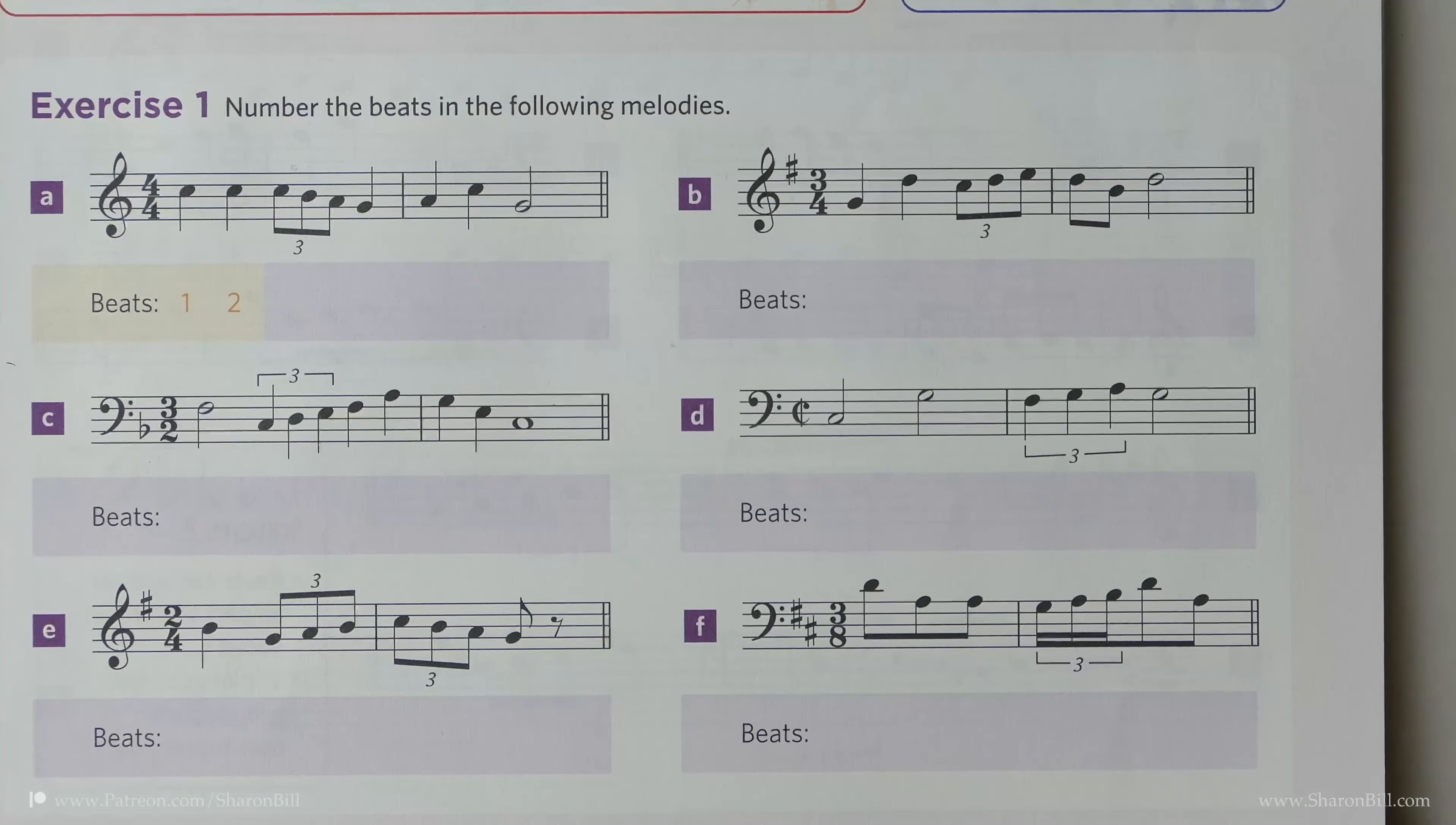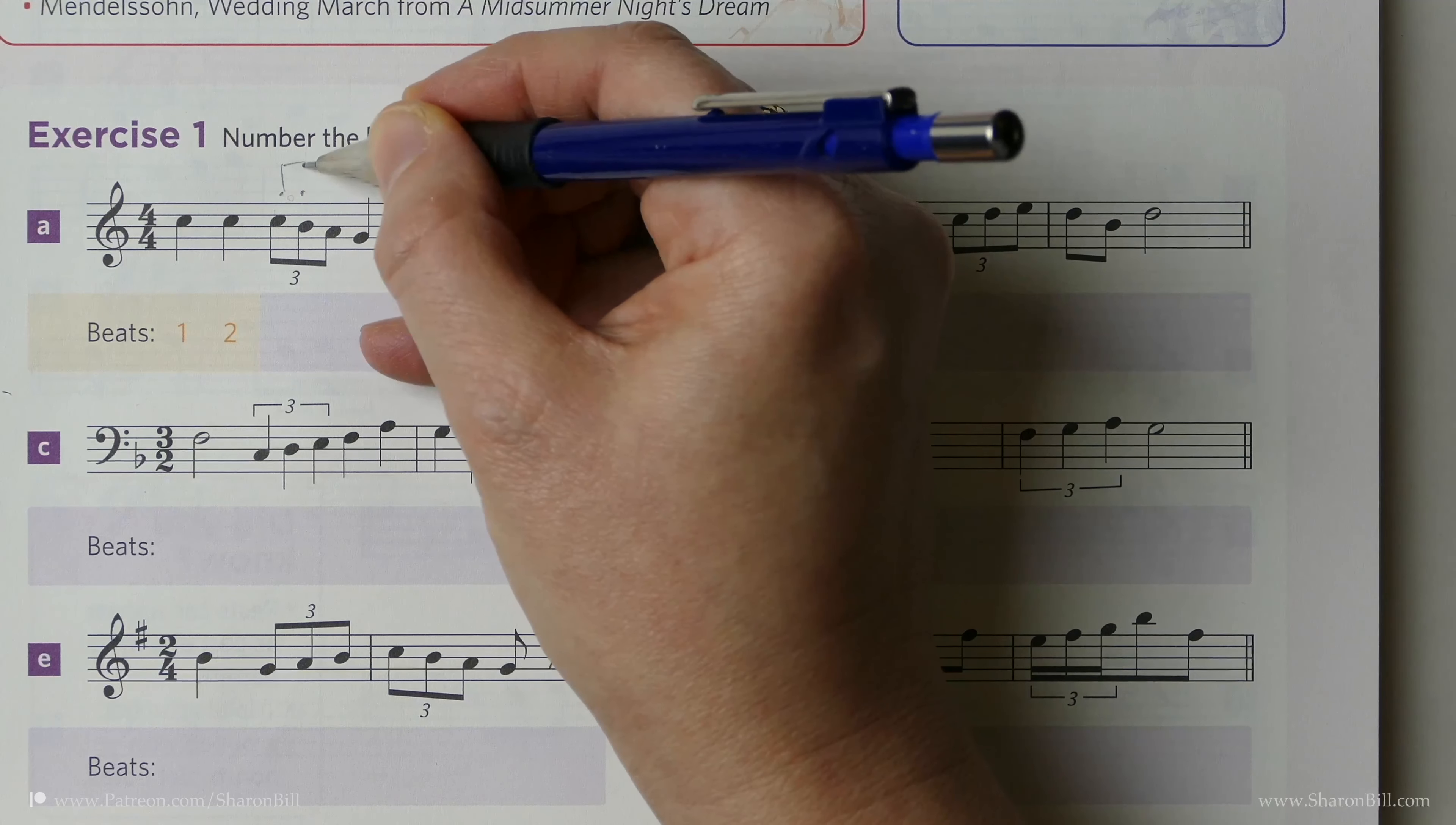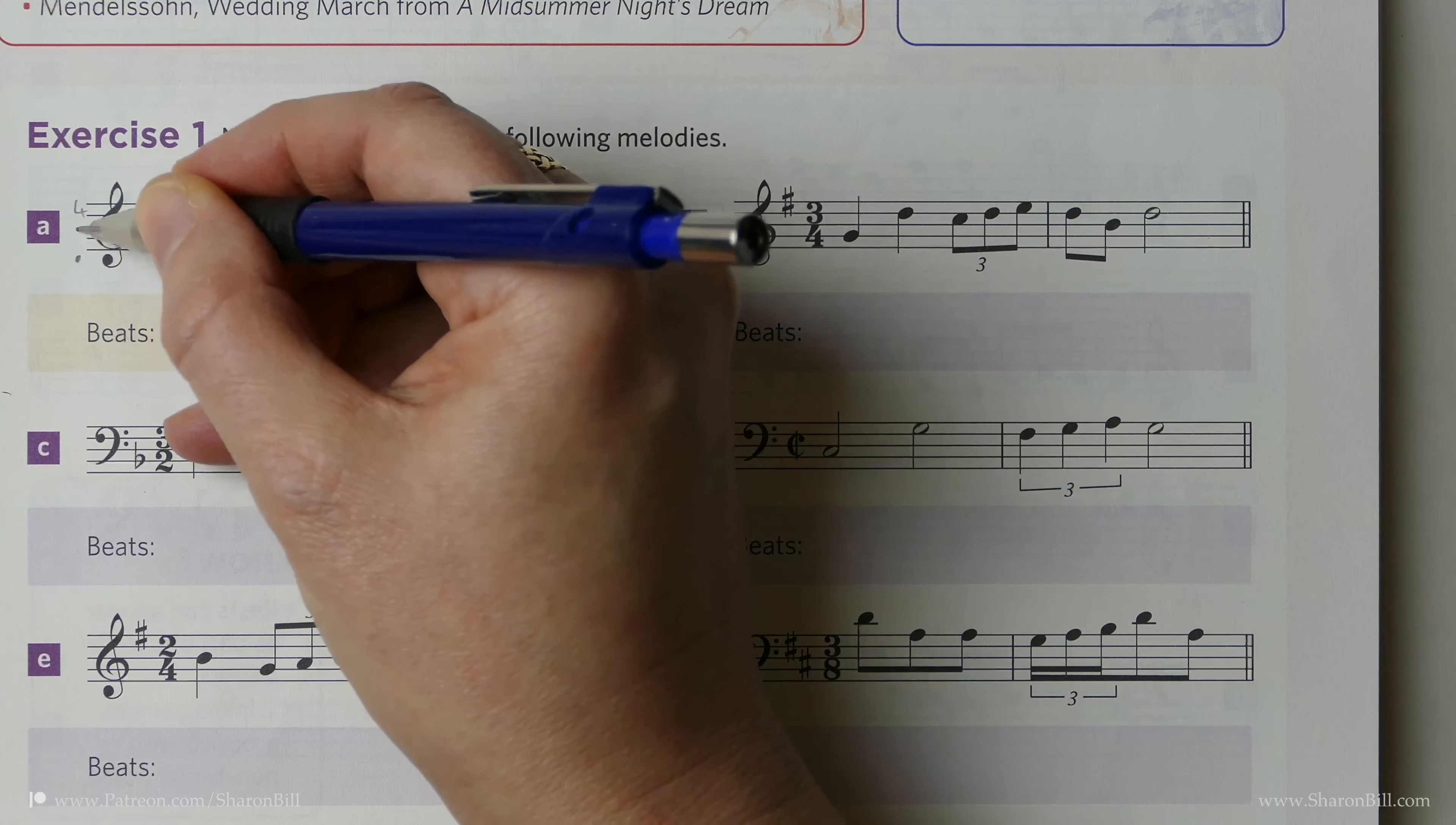In this exercise one, we have to show where the beats fall. Don't get confused by seeing a triplet sign. Just think 3 in the time of 2, and that thinking is exactly the same. Here we can see we should have 4 crotchet beats per bar - 4 beats per bar and each beat is a crotchet.